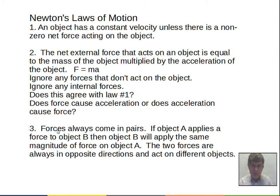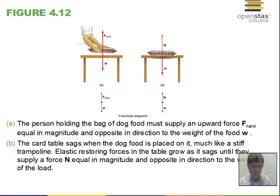Forces always come in pairs, the third law. This will come later in the videos. But if object A applies a force to object B, object B will apply the same magnitude of force to object A. The two forces are in different directions, 180 degrees apart, and the forces act on different objects.